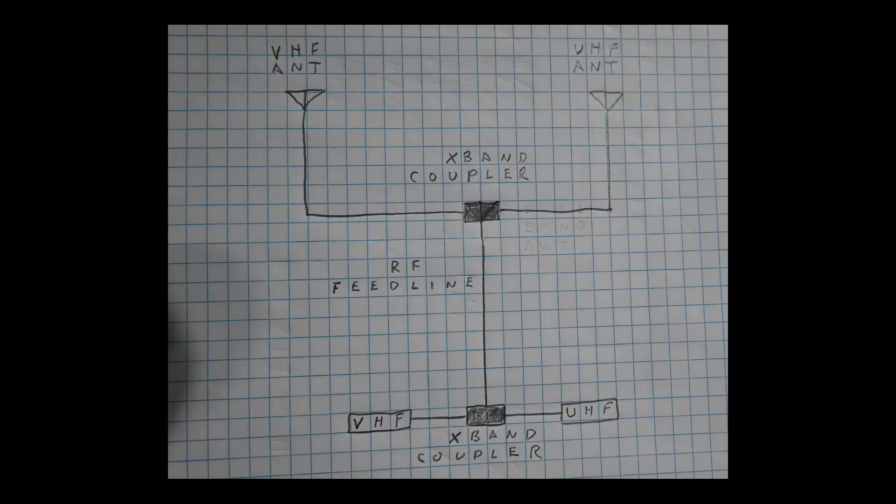Now in use case two, we would take two transmitters of differing bands, then feed the signal into a common feed line. And if the antennas we were feeding were both monoband antennas, we would place another one of these crossband couplers at the antenna end of the feed line and connect the respective antennas to the respective ports on the crossband coupler.